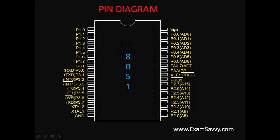The 40th pin is VCC — it is a power supply pin. Port 0 is bit and byte addressable. Port 1 is individual in nature — there is no duality here. It is used generally for general-purpose input and output operations. Port 1 is also bit and byte addressable — we can use it for bits or byte-wise. Port 2 also has duality in nature and is bit and byte addressable.